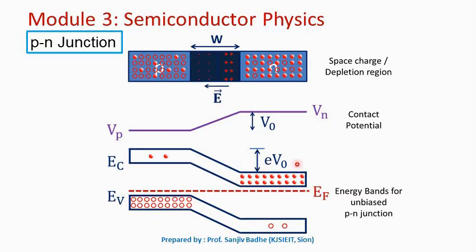Current through the P-N junction is possible only when electrons and holes cross the junction. For electrons, crossing is very difficult because they need to climb up the energy hill — they require an energy equal to eV_0 to reach the conduction band on the P side. Similarly, holes on the P side valence band climbing down the hill is equivalent to electrons on the N side valence band climbing up the hill, so for electrons it is difficult to climb up and for holes it is difficult to climb down.